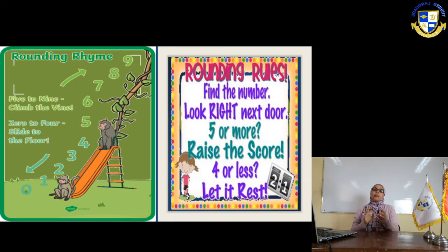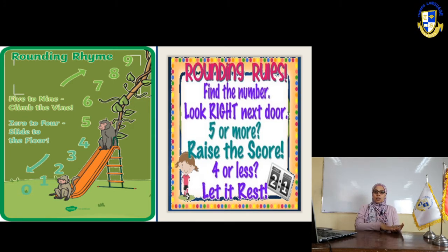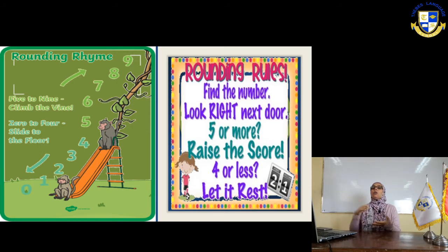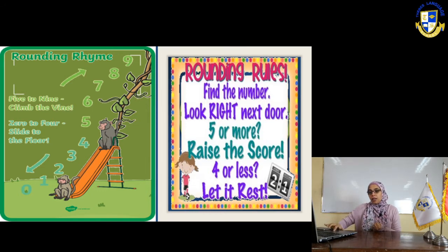So, if we have a weak number, we will leave the number as it is. If we have a strong number, we increase it by 1. Again: 0 to 4, slide to the floor. 5 to 9, climb to the vine.